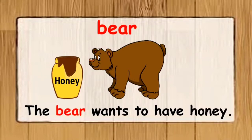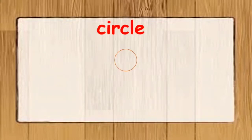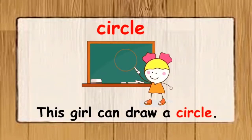The next word is circle. The word is circle. Circle is a round figure which does not have any side. I have used the word circle in a sentence: this girl can draw a circle. Look at the circle she has drawn on the board — don't you feel she can draw a circle really well?